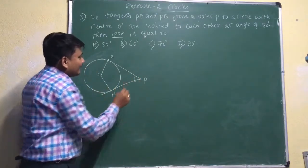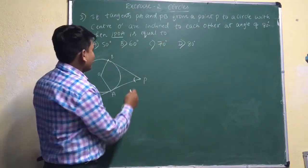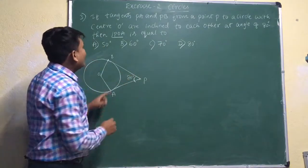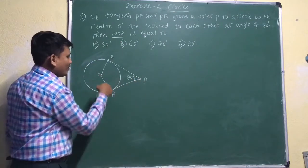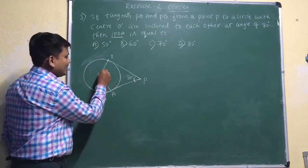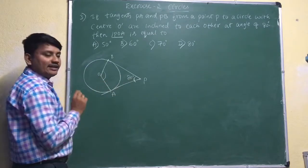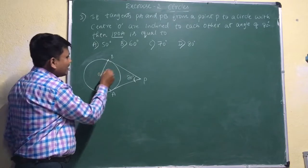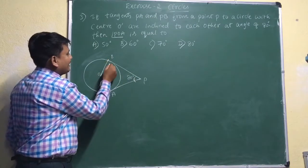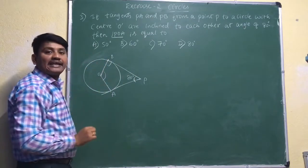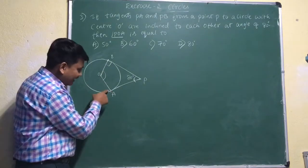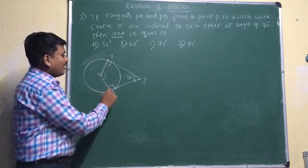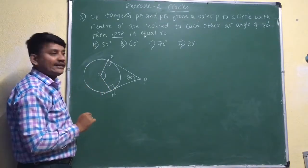Now, the tangents are inclined at an angle of 80 degrees, meaning both tangents meet at 80 degrees at point P. We need to find angle POA. First I will find the full angle BOA, then I will find POA. We already know that a radius and tangent at the point of contact are always perpendicular to each other — they meet at 90 degrees.